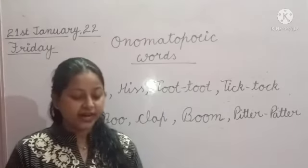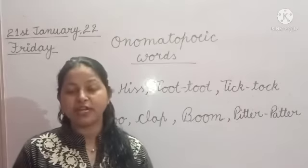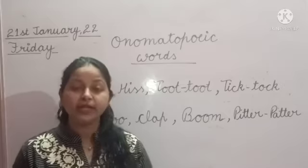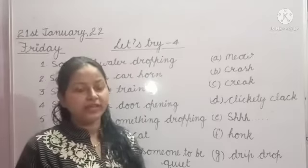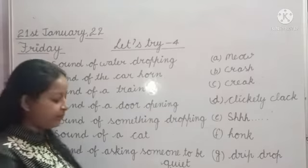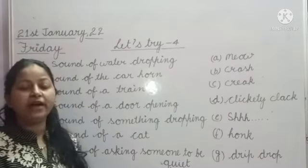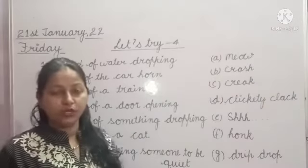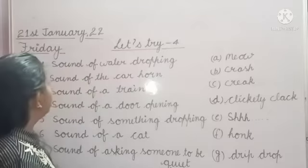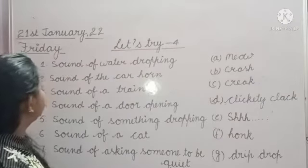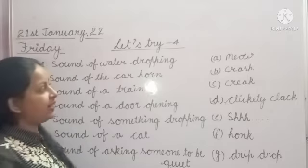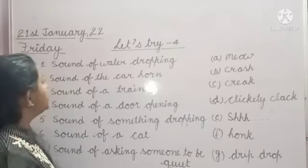Now we will do our Let's Try activity on page number 45. In this Let's Try, we have to match the sounds with their correct meanings — matching the Onomatopoeia words with their correct person, object, or animal.